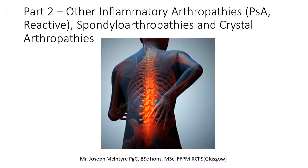This lecture is part two of the rheumatology discussion within this module. It follows on from part one which looked at osteoarthritis and rheumatoid arthritis. In part two we're going to look at the other inflammatory arthropathies, such as psoriatic arthropathy and reactive arthritis, the spondyloarthropathies — in particular ankylosing spondylitis — and the crystal arthropathies. There is also a section on septic arthritis.